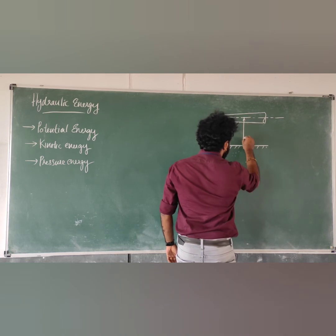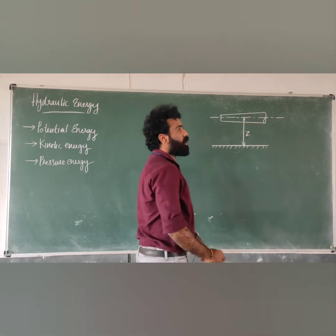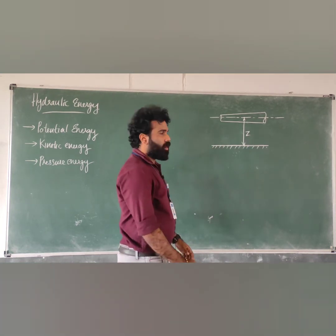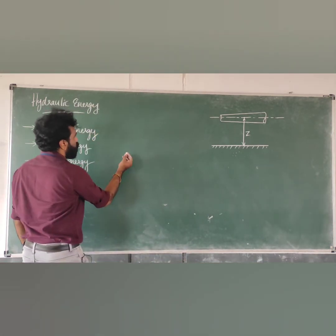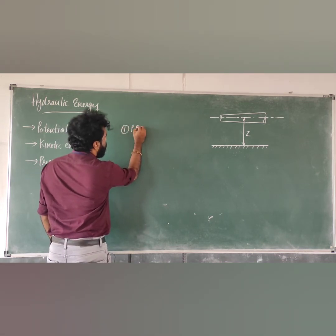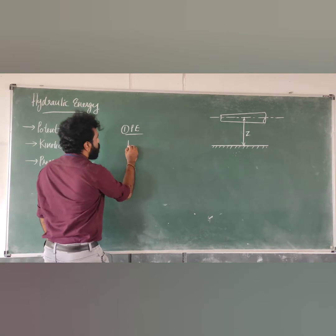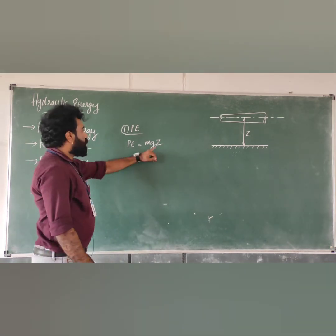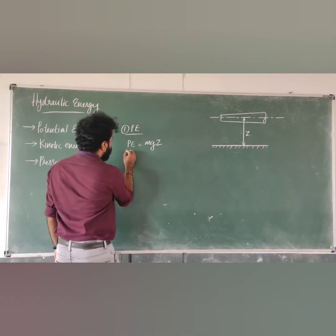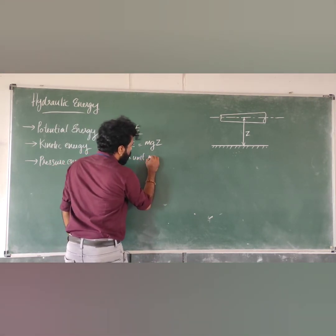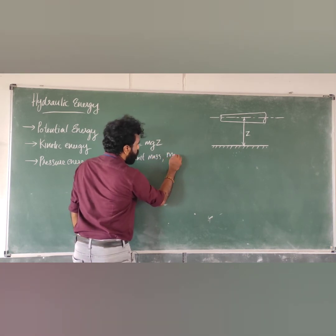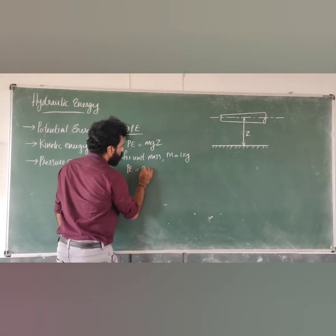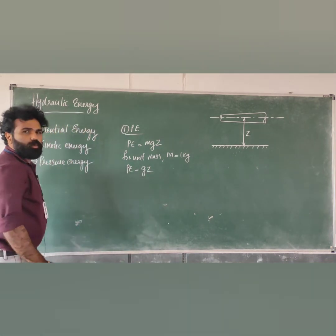Suppose the height from the ground datum to the center line of the pipe is Z. Potential energy equals M times G times Z. For unit mass where M equals 1 kg, potential energy equals G times Z.